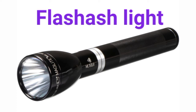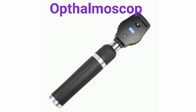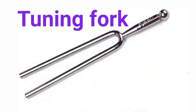A flashlight is used to visualize any part of the body. A weight machine is used to check the weight of the patient's body. An ophthalmoscope is used to examine the inner part of the eyeball. A tuning fork is used to check hearing power.